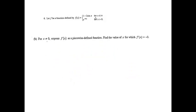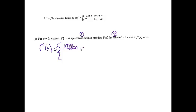Part B. For x not equal to 0, express f prime of x as a piecewise defined function, and find the value of x for which f prime of x equals negative 3. We know how to take a derivative of a piecewise function — we just keep it in two parts. The derivative of the top part gives negative 2 cosine x for x less than 0. The derivative of e to the negative 4x gives negative 4 e to the negative 4x for x greater than 0.